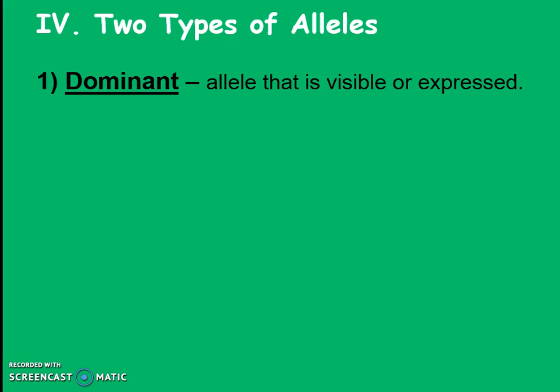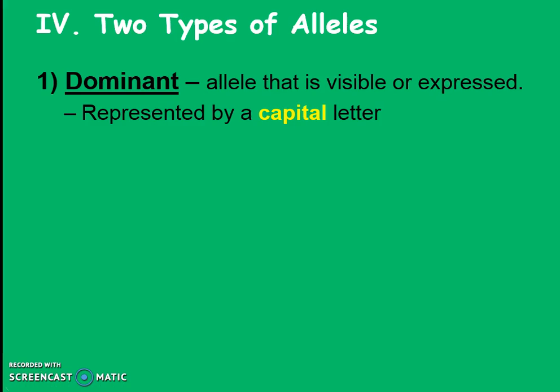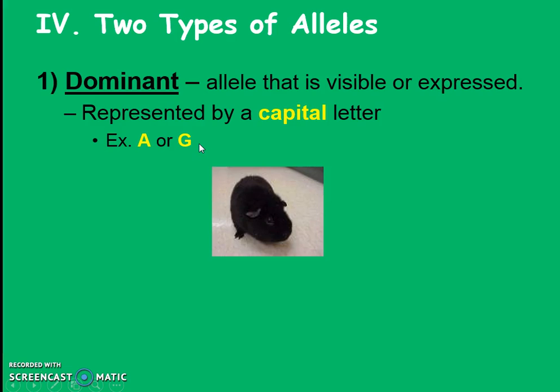When we think about our alleles, we usually have two different categories or types. Some alleles are the dominant version. Dominant alleles are always visible or expressed. We're going to pick a capital letter that seems very dominating to represent dominant — so for instance a big letter A or a big letter G. For this guinea pig, which is black, let's pick big B to represent black fur. That's how we would write it — big B for black fur.